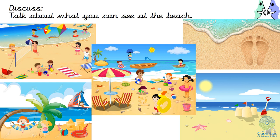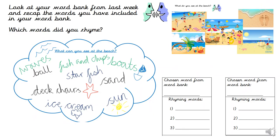Just to re-jog your memories from last week, I would like you to have another discussion and this time talk about what you can see at the beach, because you will need to use these ideas to help you write your poem. Pause the video now and talk about what you can see in the pictures. Those are some fantastic words — they will really help you with writing your poem today. Now find your word bank and rhyming words from last week and read through your ideas.